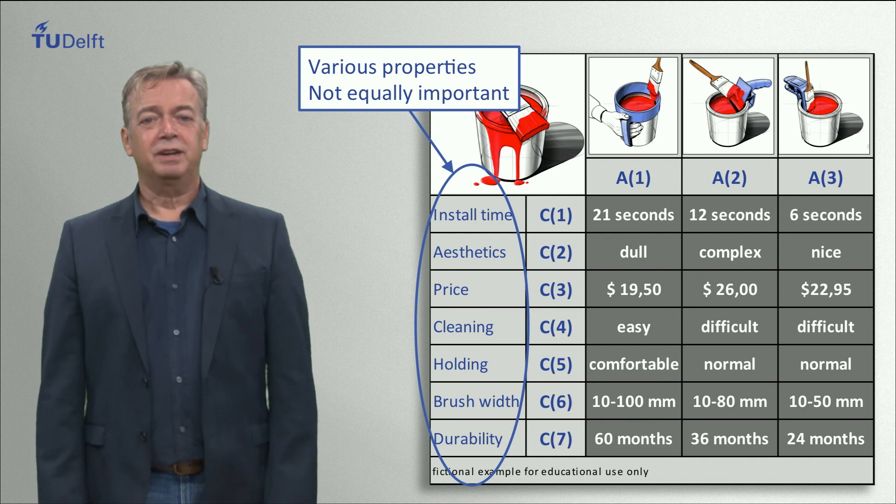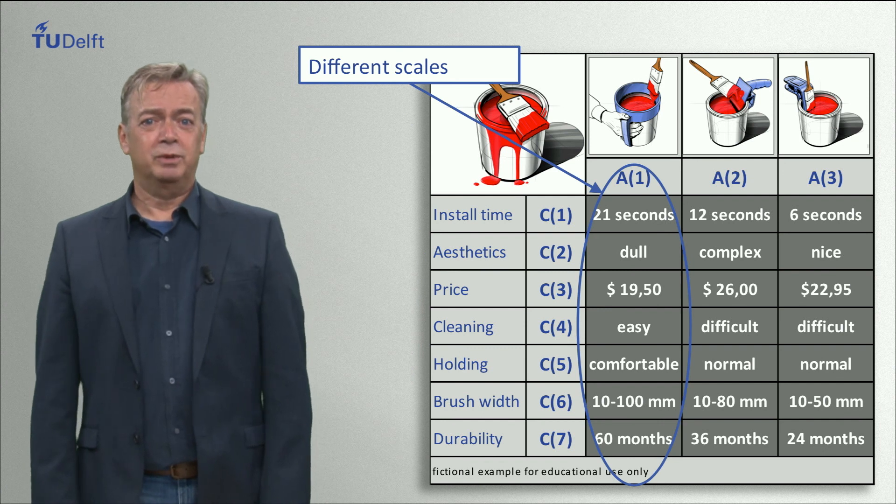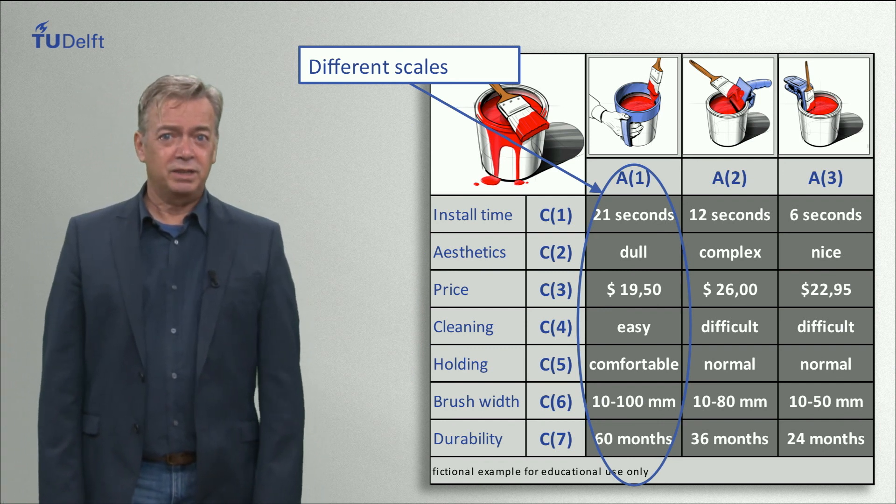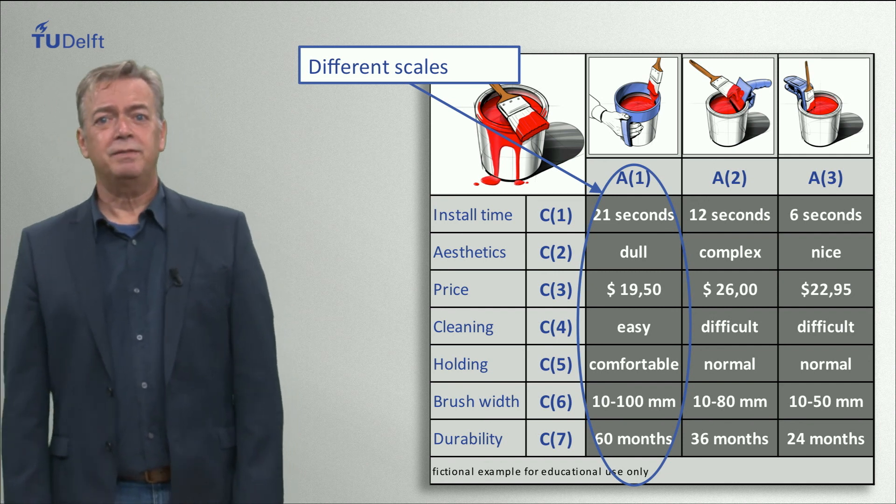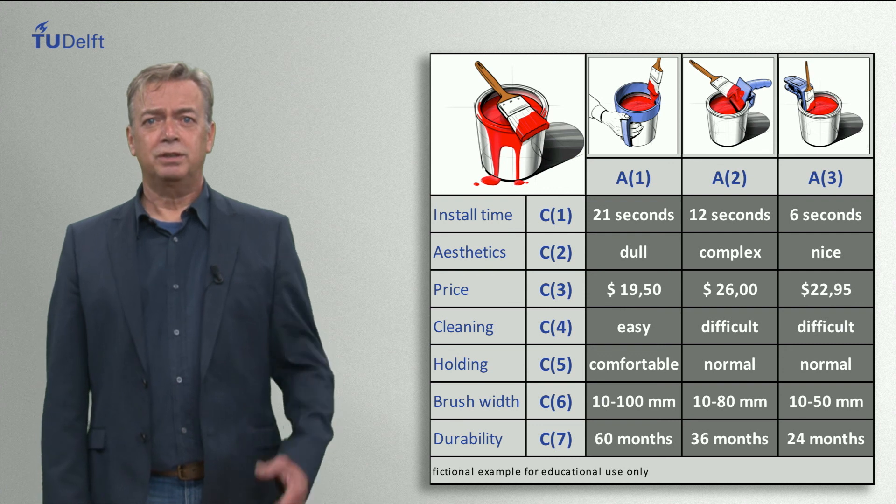Thirdly the scales for different criteria on which you assess each alternative are different, for example seconds, dollars or months. And in the fourth place you have to deal with both qualitative and quantitative criteria. For example dollars versus dull.